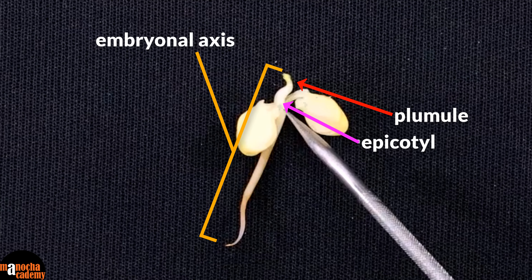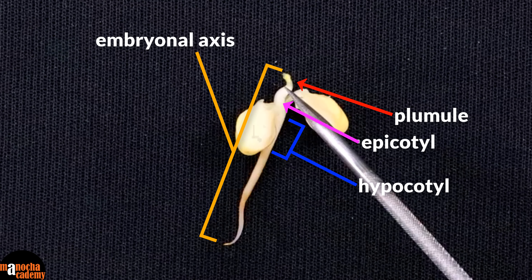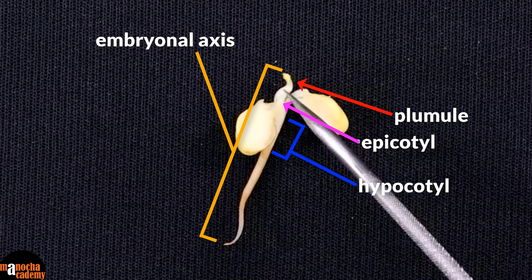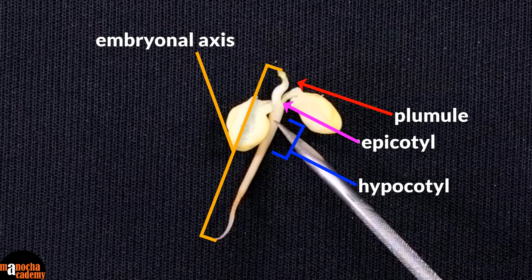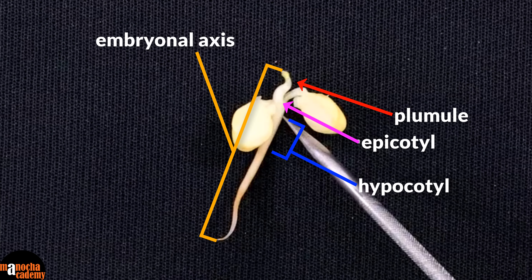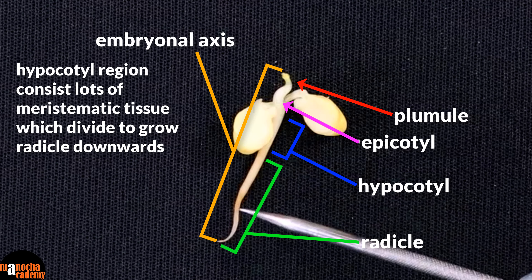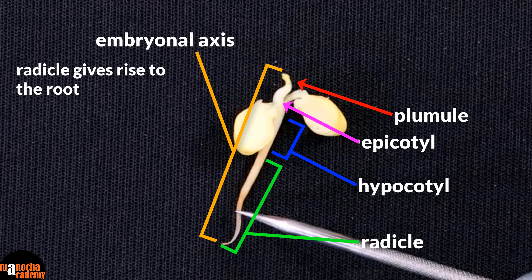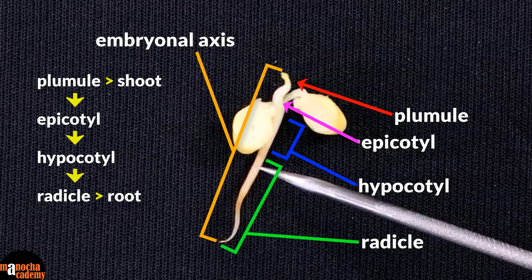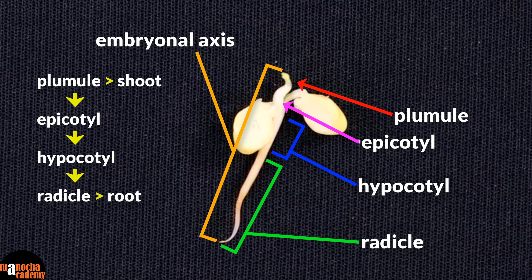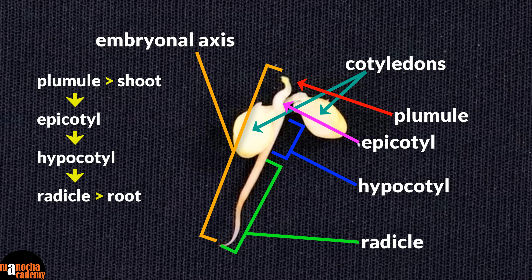The next part of the embryonal axis is known as the hypocotyl. There is no external differentiation between the parts, except that in the plumule region you can see small leaves coming out. After the plumule we have the epicotyl, then the lower part is the hypocotyl — again a meristematic region. When the cells of the hypocotyl divide, the radicle grows downwards. The radicle gives rise to the root. So you have the plumule which is the future shoot, then the epicotyl, then the hypocotyl, and finally the radicle which is the future root. These are the parts of a dicot seed and that is how you dissect it to observe the embryonal axis.